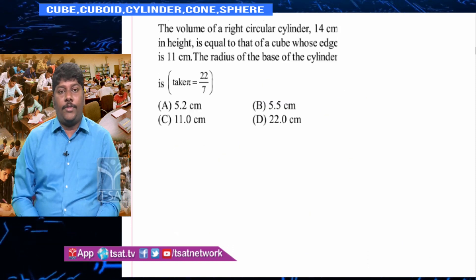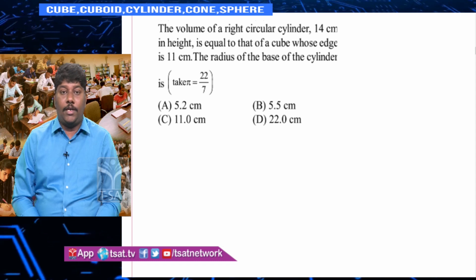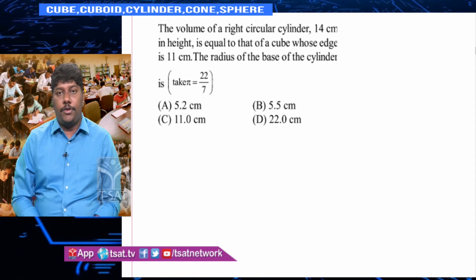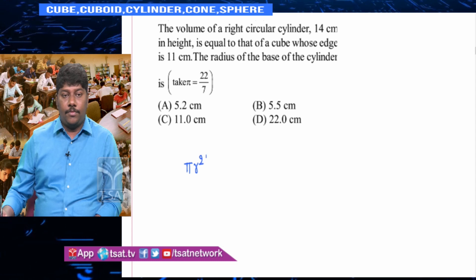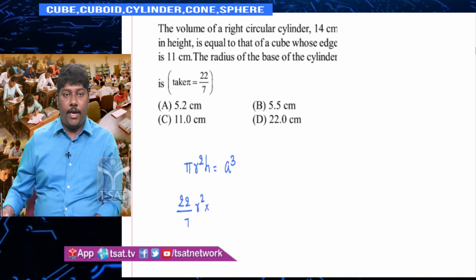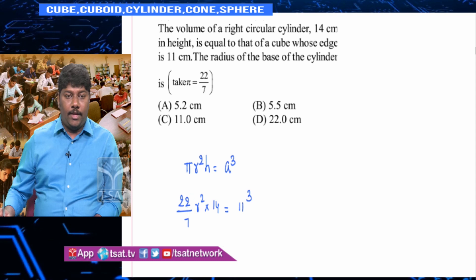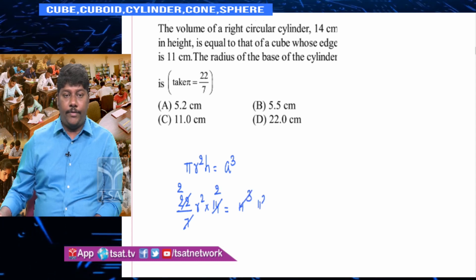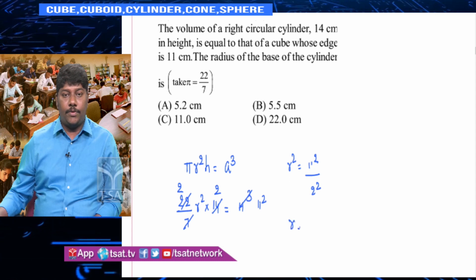A right circular cylinder of height 14 cm has volume equal to that of a cube whose edge is 11 cm. Find the radius of the base. Equating volumes: πr²h = a³, so (22/7) × r² × 14 = 11³. Solving: r² = 11²/4, therefore r = 11/2 = 5.5 cm.